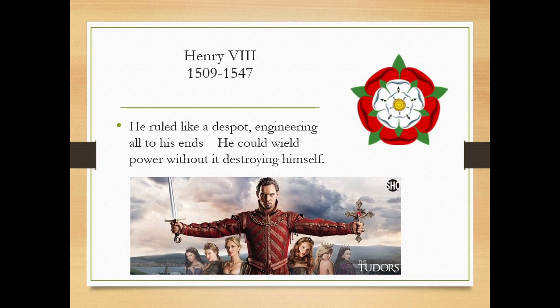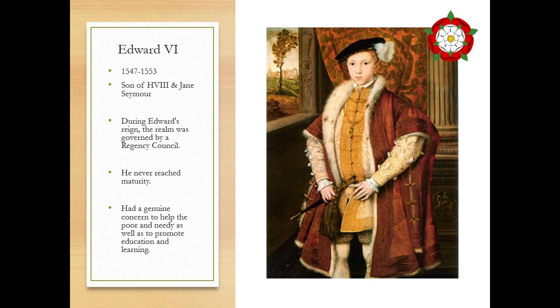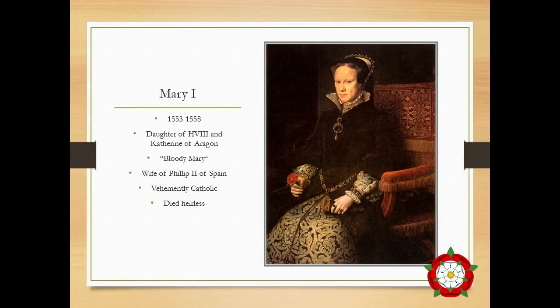Edward VI, Henry's son, is going to come to the throne but he's never actually going to reach majority. He is going to only be on the throne for five years; his realm is going to be governed by a regency council in his name. He had a genuine concern to help the poor and the needy as well as to promote education and learning. It's rather regrettable that he didn't live — he might have been an interesting monarch, especially following his father. And we now have Mary Tudor — Bloody Mary, the daughter of Catherine of Aragon.